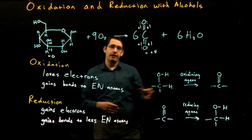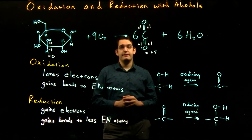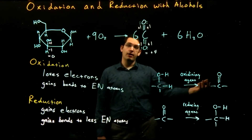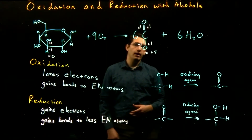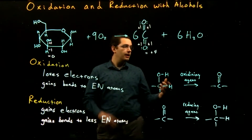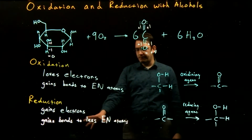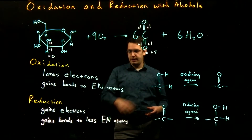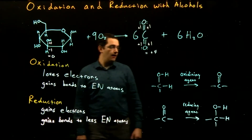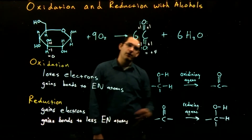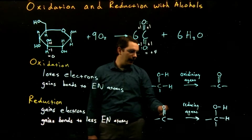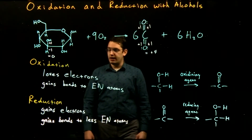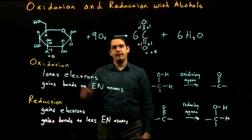You might notice similarities to the previous hydrogenation and dehydrogenation reactions of alkanes and alkenes. When oxidizing that alcohol, we're removing hydrogens — essentially doing a dehydrogenation similar to going from an alkane to an alkene. That alkane-to-alkene dehydrogenation is also an oxidation reaction, because we're losing bonds to less electronegative hydrogens and gaining bonds to carbons with equal electronegativity. Conversely, reduction of our carbonyl is similar to hydrogenation of alkenes — adding hydrogens to a double bond is a reduction reaction.